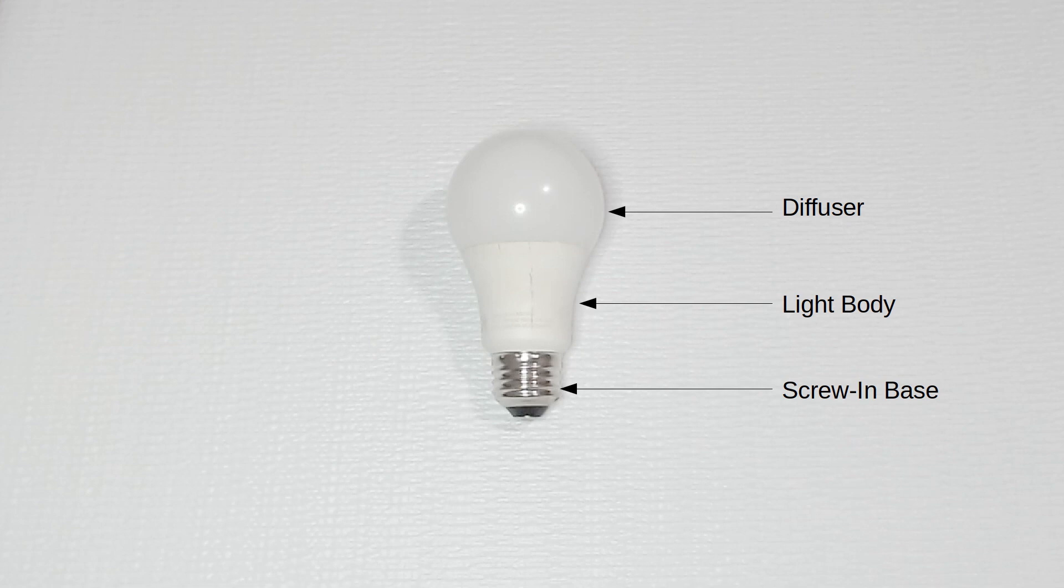The outside of the LED light bulb has a diffuser globe, light body, and screw-in base.